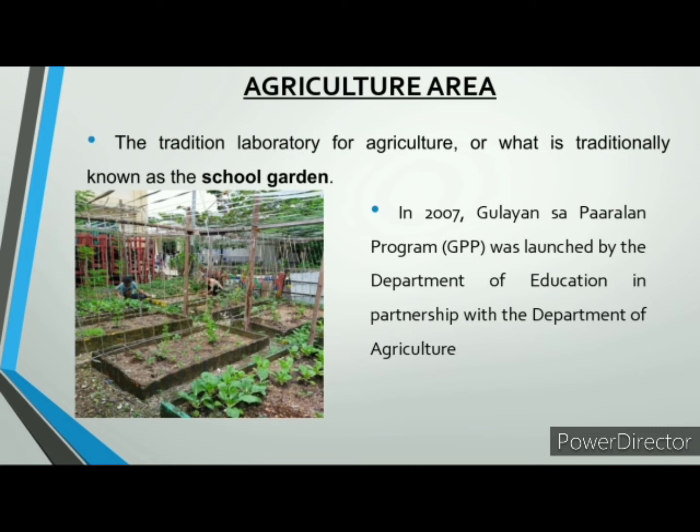The Department of Education, through the Bureau of Learner Support Services, School Health Division, strengthened the implementation of the Gulayan sa Paaralan program in public elementary and secondary schools nationwide to address malnutrition and to promote vegetable production and consumption among school children. This memorandum is issued to sustain school gardens not only to attain 63% sustainable garden at present but also to establish gardens in all schools nationwide.